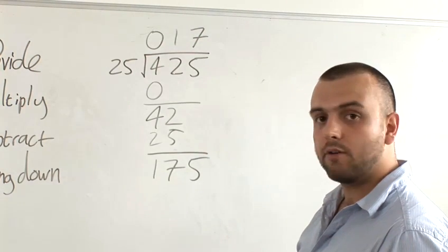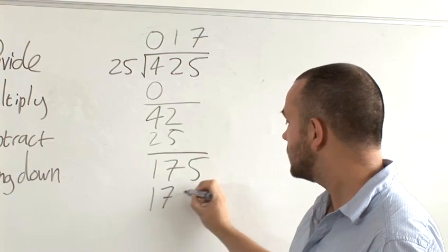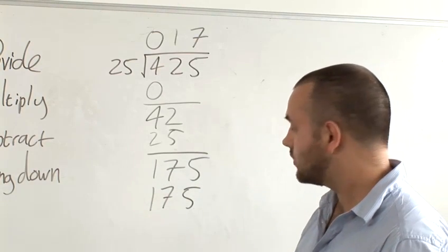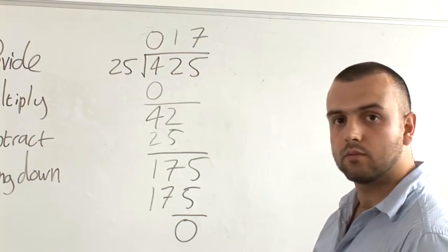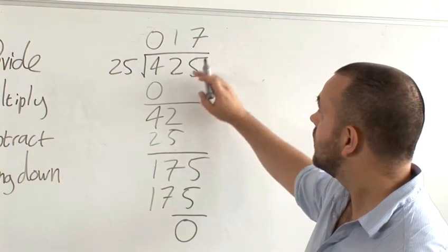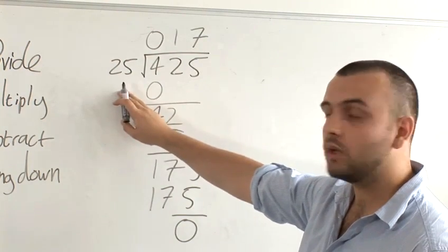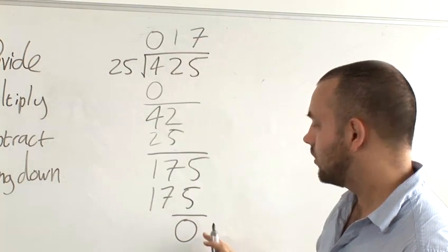Seven times 25 is 175. Subtract to give us 0. And there are no more numbers to bring down. This gives us our answer. 425 divided by 25 is 17 with no remainder.